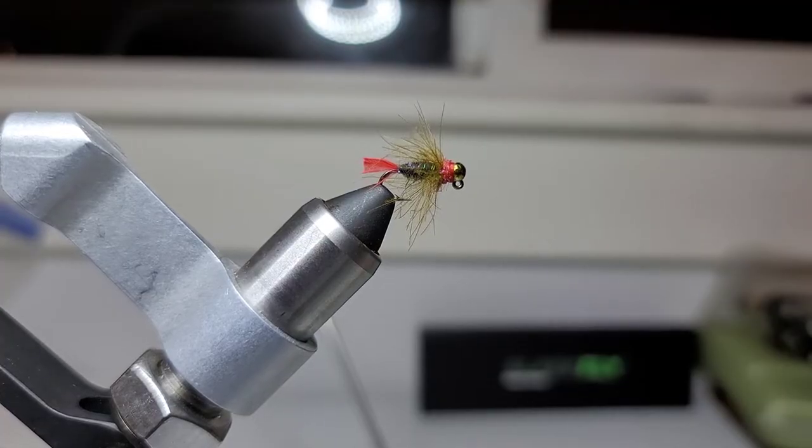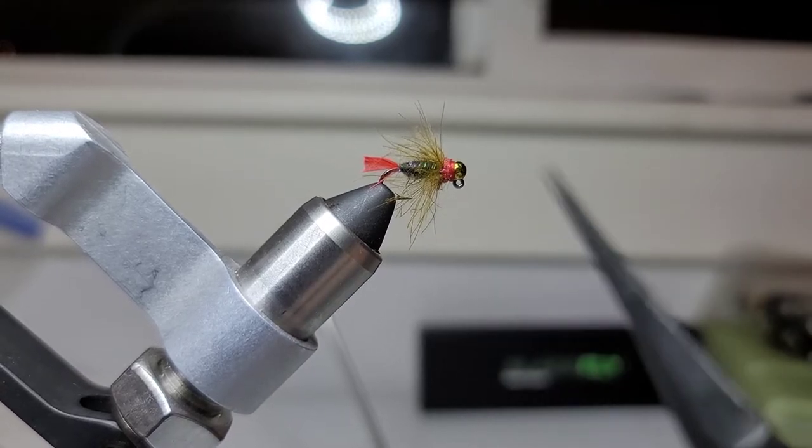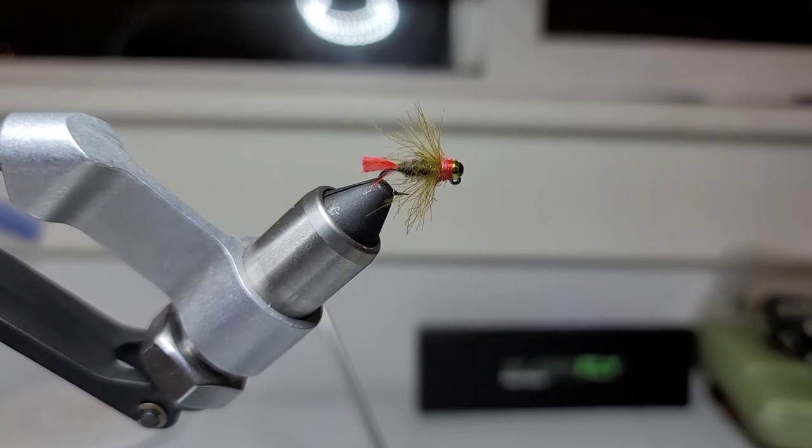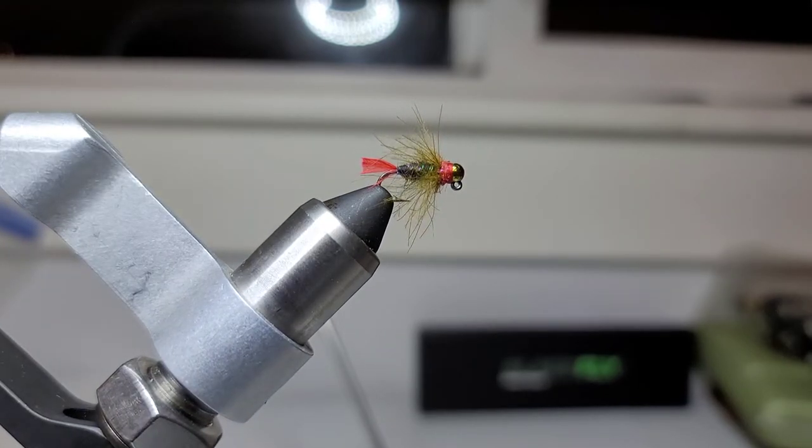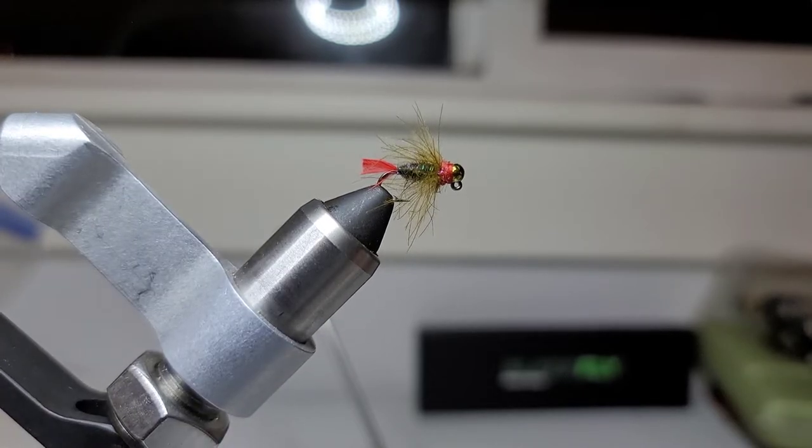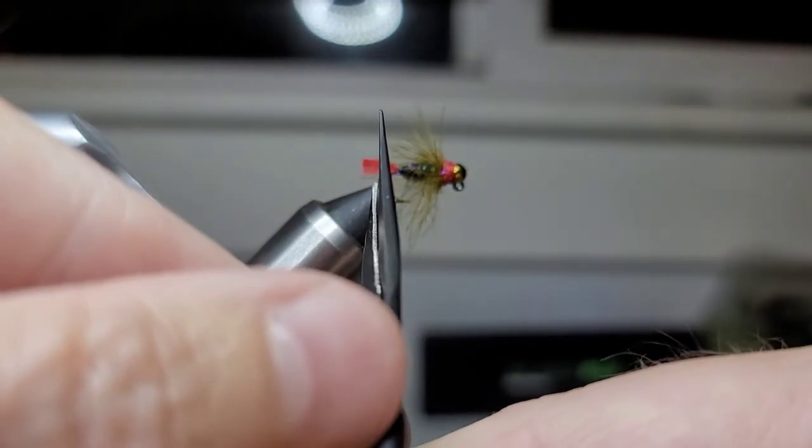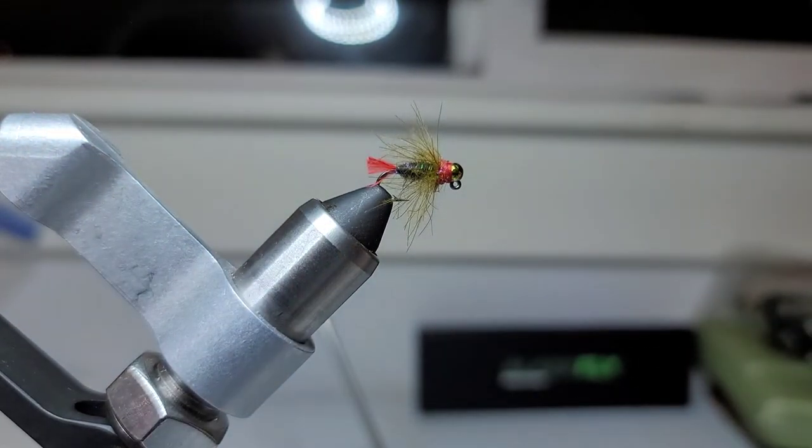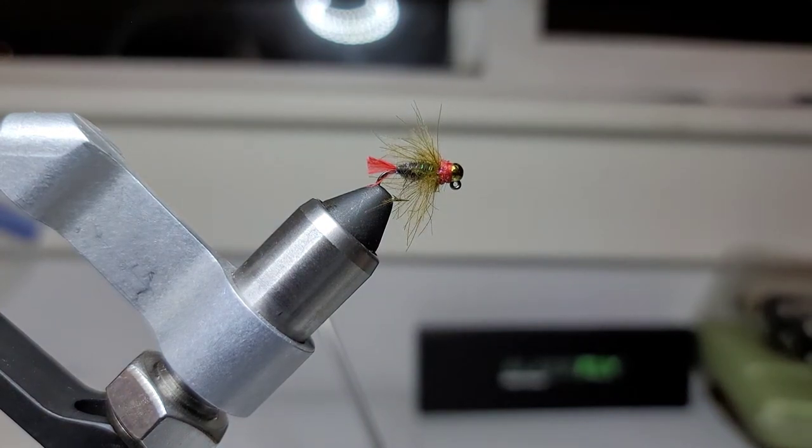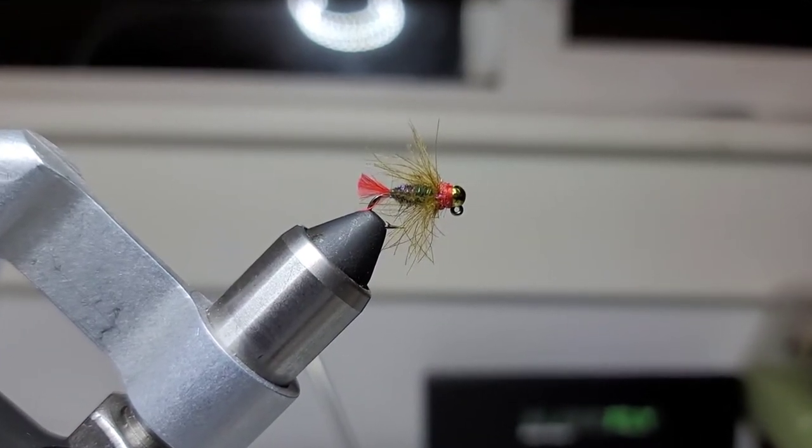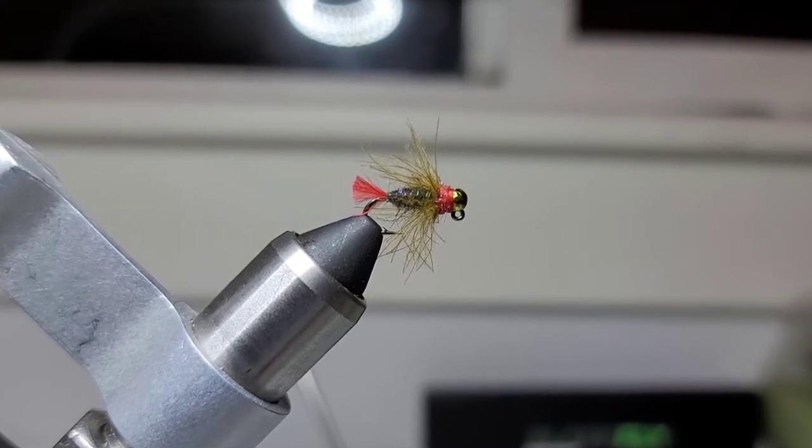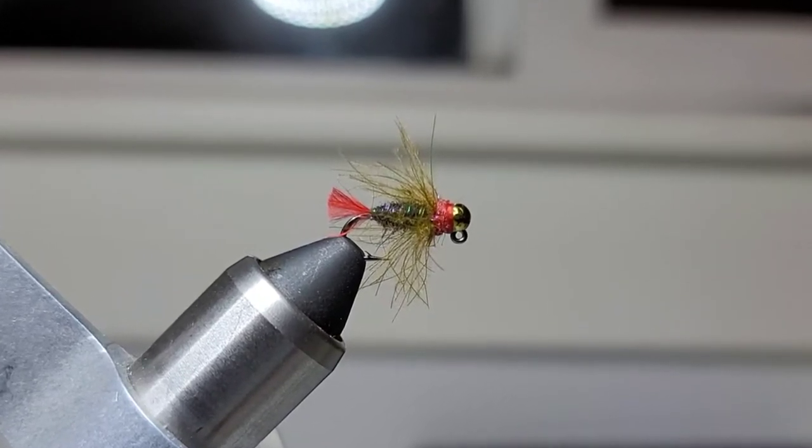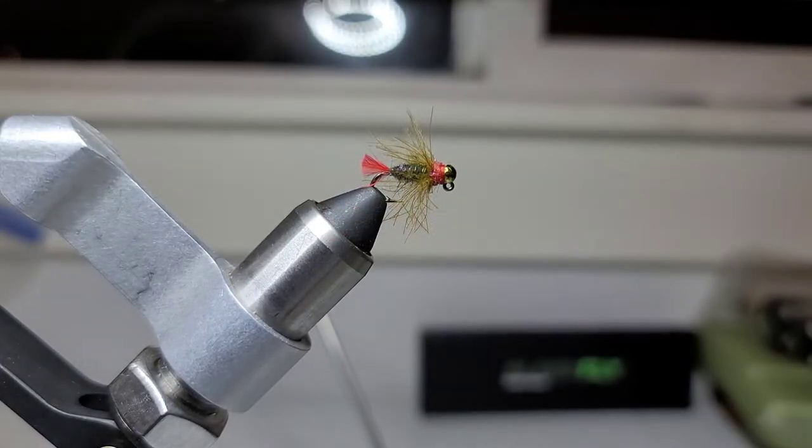So I went ahead and I just cleaned it up with my fine point scissors. I trimmed the CDC just a little bit. Just to me, just a little bit too much. I really don't want it to extend past the tail. And I feel like the tail is even just a little much. Yeah, that's a little better. But yeah guys, that's an Egan's Red Dart variation with olive CDC and my own concoction of dubbing for the body or thorax. Let me show you guys something cool real quick.